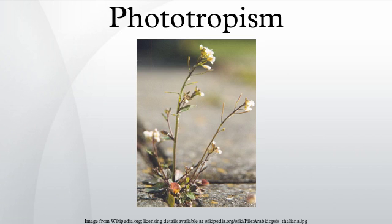Phototropism is one of the many plant tropisms or movements which respond to external stimuli. Growth towards a light source is called positive phototropism, while growth away from light is called negative phototropism. Most plant shoots exhibit positive phototropism and rearrange their chloroplasts in the leaves to maximize photosynthetic energy and promote growth.